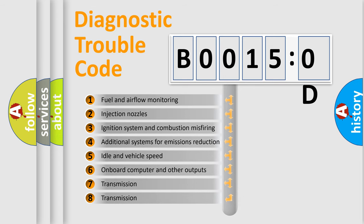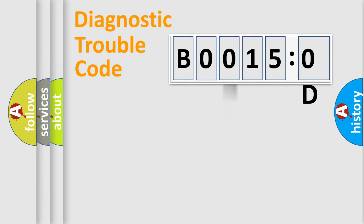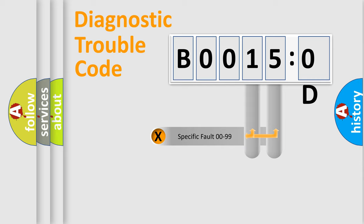The third character specifies a subset of errors. The distribution shown is valid only for the standardized DTC code. Only the last two characters define the specific fault of the group.